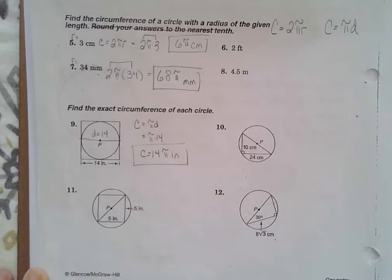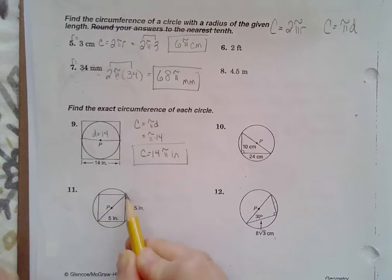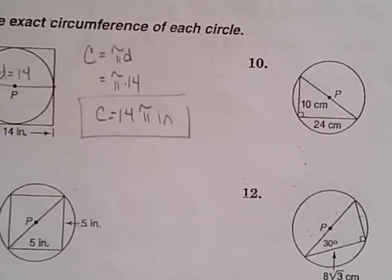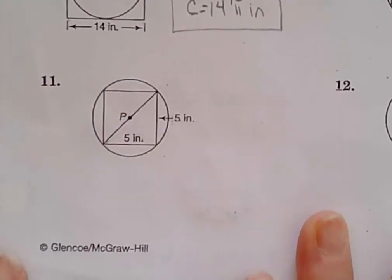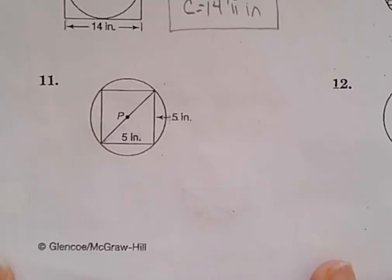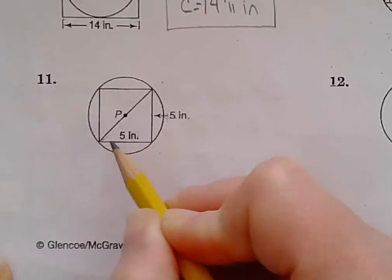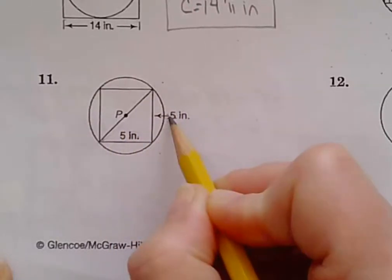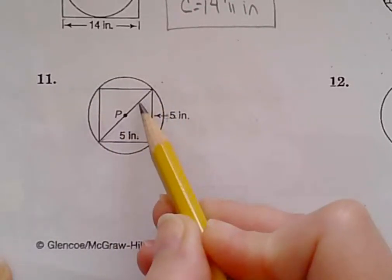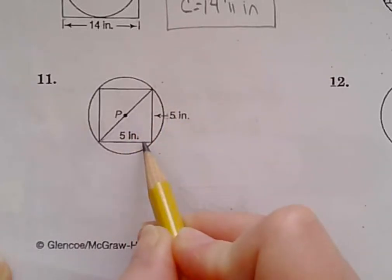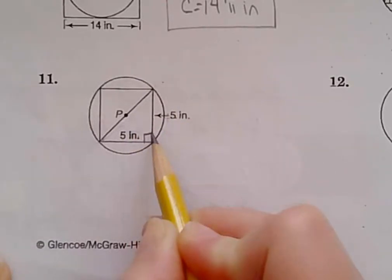So here we have a triangle. I'm going to zoom in so you can see it a little better. So here we have a quadrilateral inscribed in a circle. So let's notice this picture here. This is 5. This is 5. Here is your diameter. This is a right angle.